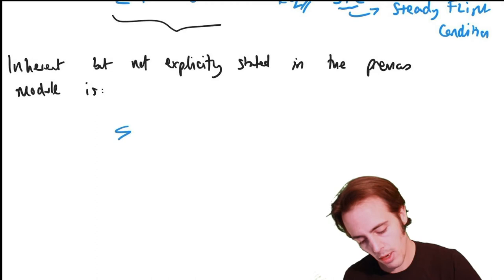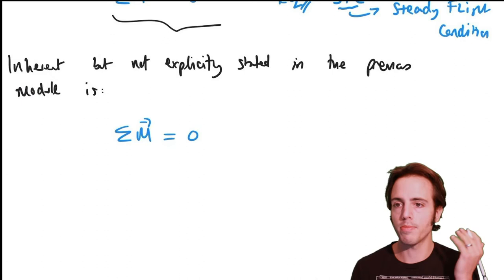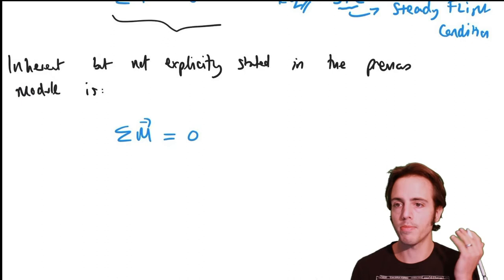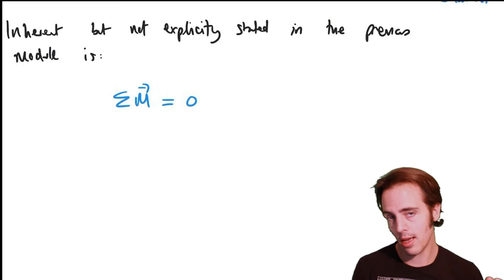So we'll also say that the sum of the moments at any time acting on the aircraft has to be equal to zero. This defines another set of parameters we can look at — it defines the trim state of the aircraft.